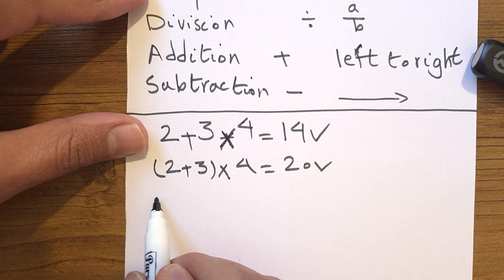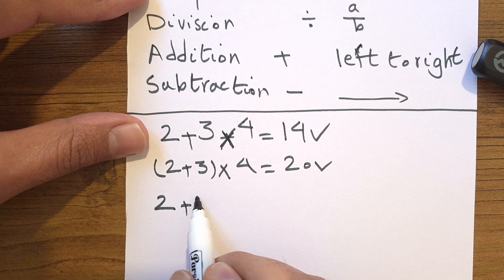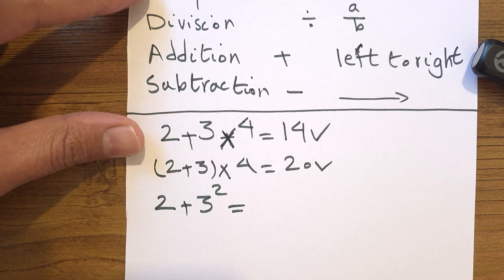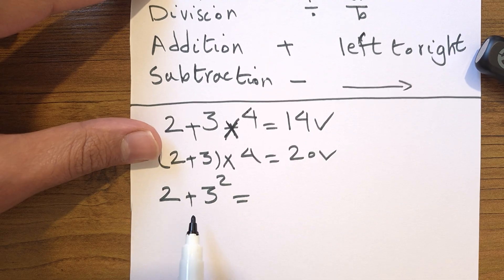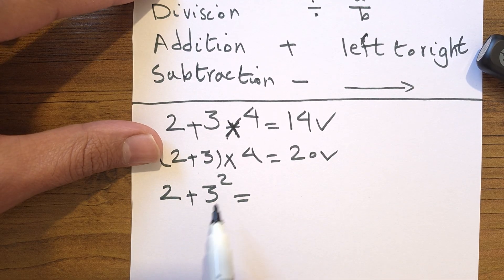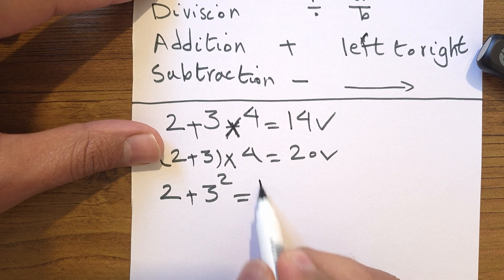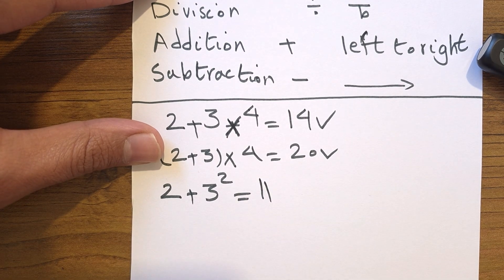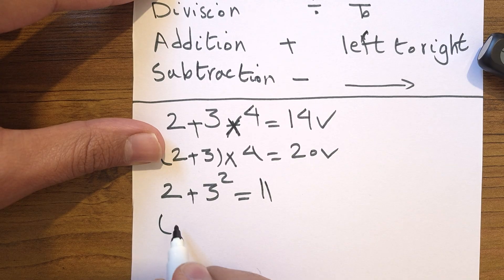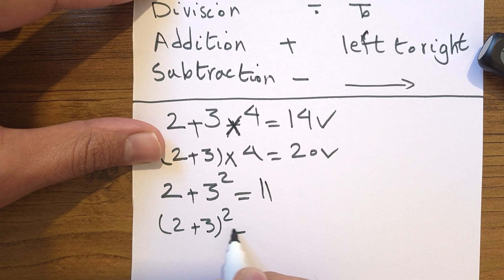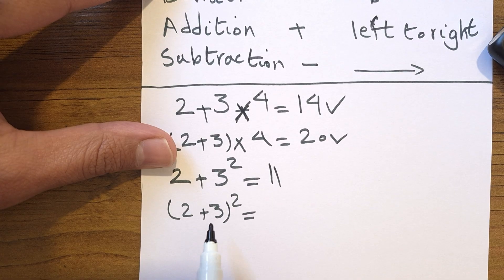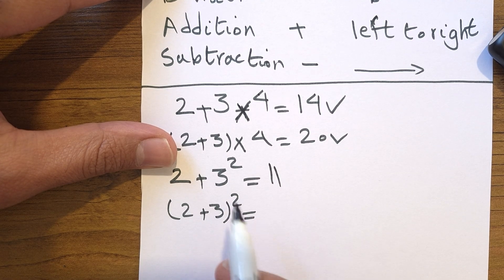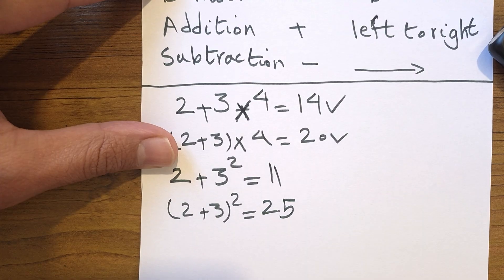For exponents: consider 2 plus 3 to the power of 2. Exponents have higher priority than addition or subtraction. So 3 to the power of 2 is 9, then 2 plus 9 is 11. But what about (2 plus 3) to the power of 2? Now parentheses have the highest priority: 2 plus 3 is 5, and 5 to the power of 2 is 25.